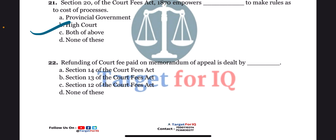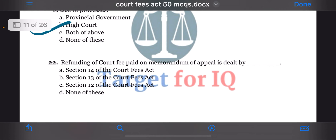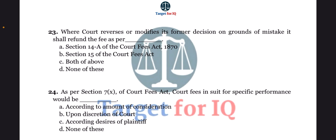Next question: refunding of court fee paid on memorandum of appeal is dealt by dash. The options are A. Section 14, B. Section 13, C. Section 12, or D. None of these. The correct answer is option B. Section 13.